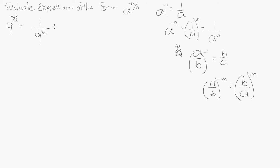This equals 1, and in the denominator we have the square root of 9 raised to the 3rd power, which is 1. The square root of 9 is 3 raised to the 3rd power. This is 1 over 27.